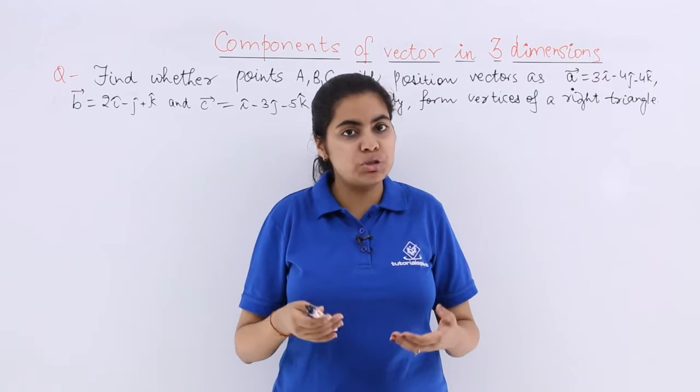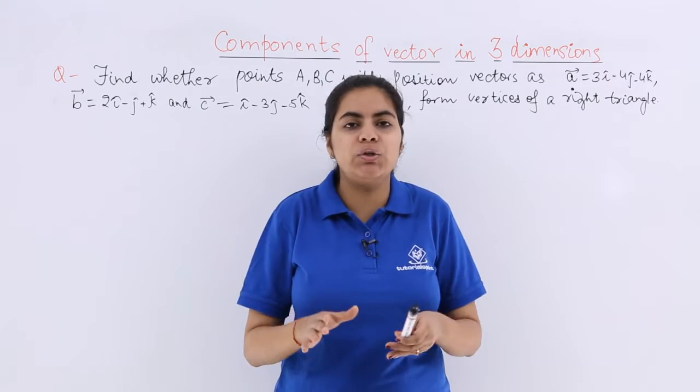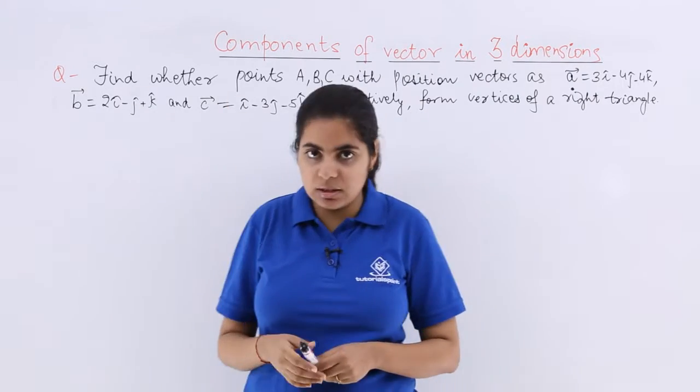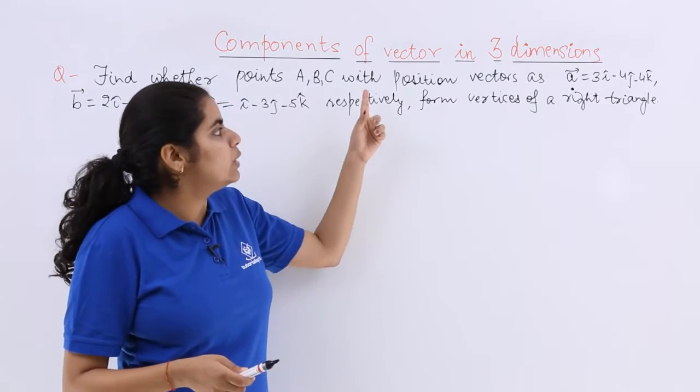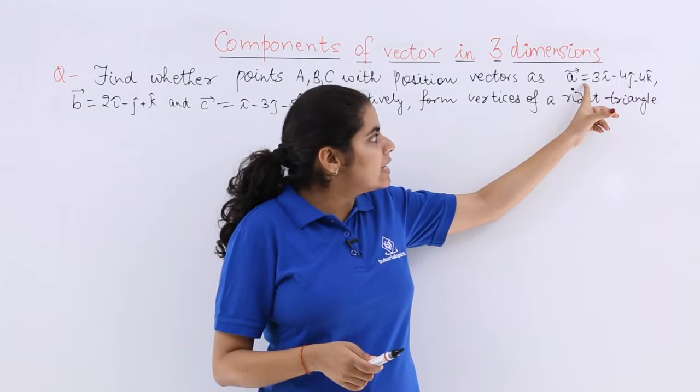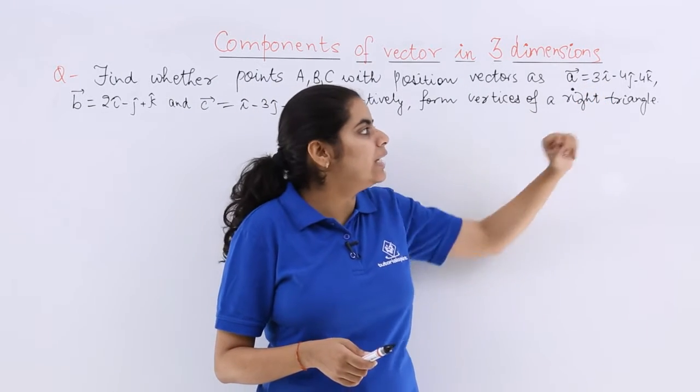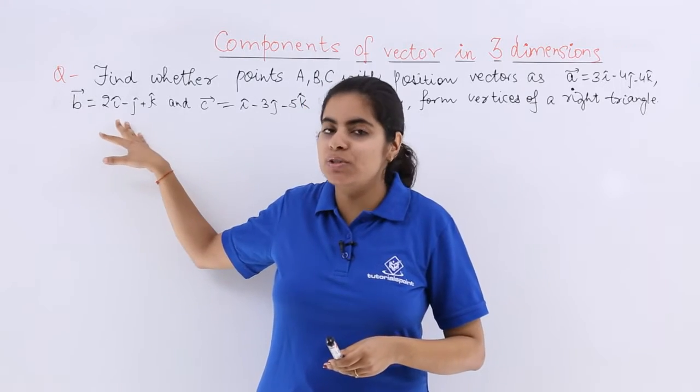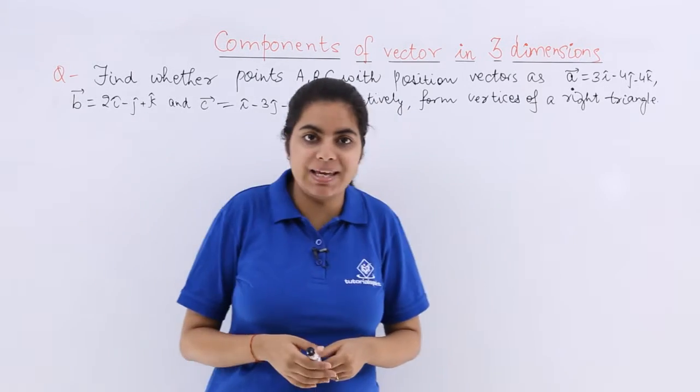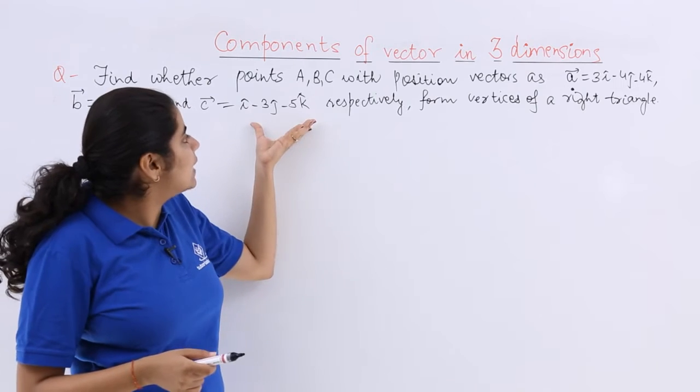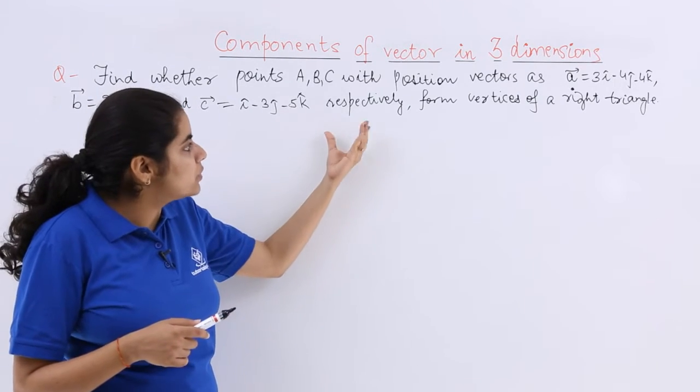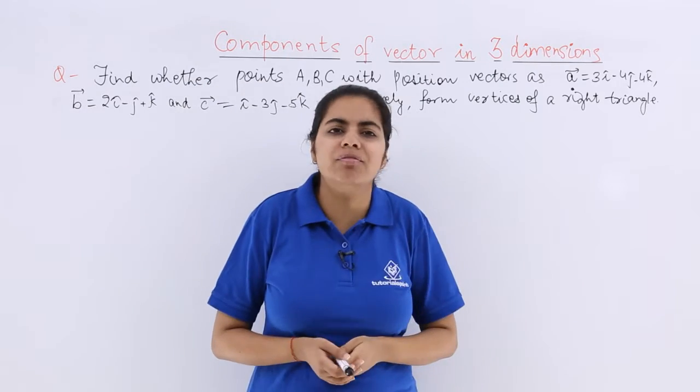This is a question which will test your deep understanding of the topic, especially of position vectors. The question says find whether the points A, B, C with the position vectors as A vector equals 3i cap minus 4j cap minus 4k cap, B vector equals 2i cap minus j cap plus k cap, and C vector equals i cap minus 3j cap minus 5k cap respectively form the vertices of a right triangle.